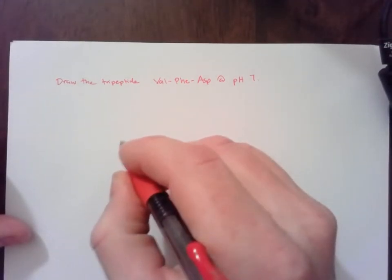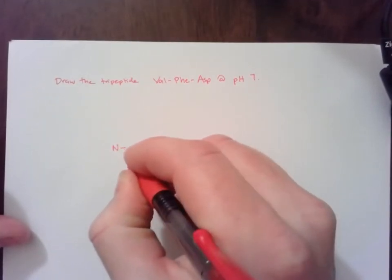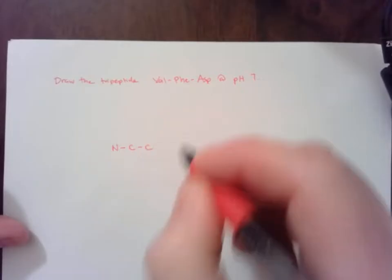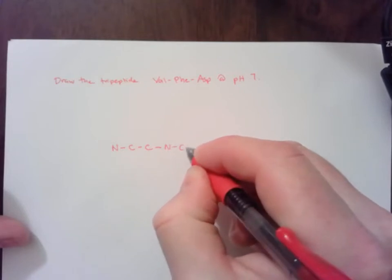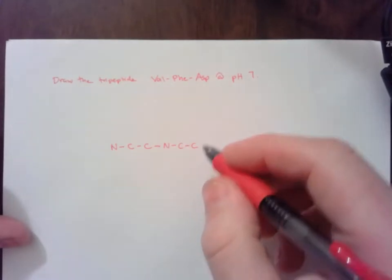So, you should draw the backbone first. N-C-C, this is going to be our first amino acid, followed by N-C-C for our second amino acid.